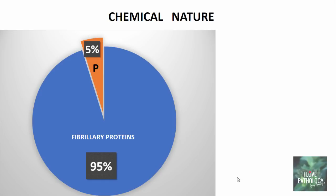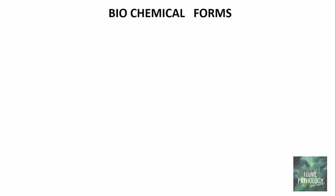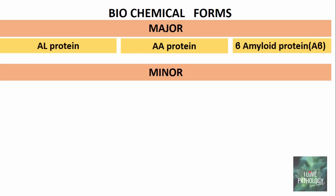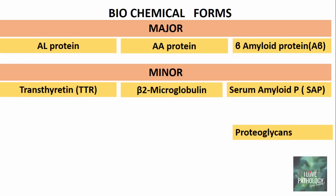Coming to the chemical nature of amyloid proteins: 95% is made up of fibrillar proteins, whereas only 5% is made up of P component proteins — which could be proteoglycans, glycosaminoglycans, or serum amyloid P. The biochemical forms of amyloid can be categorized into major and minor forms. The three major forms are AL protein, AA protein, and beta-amyloid protein. The minor biochemical forms include transthyretin, beta-2 microglobulin, serum amyloid P, proteoglycans, and highly sulfated glycosaminoglycans.